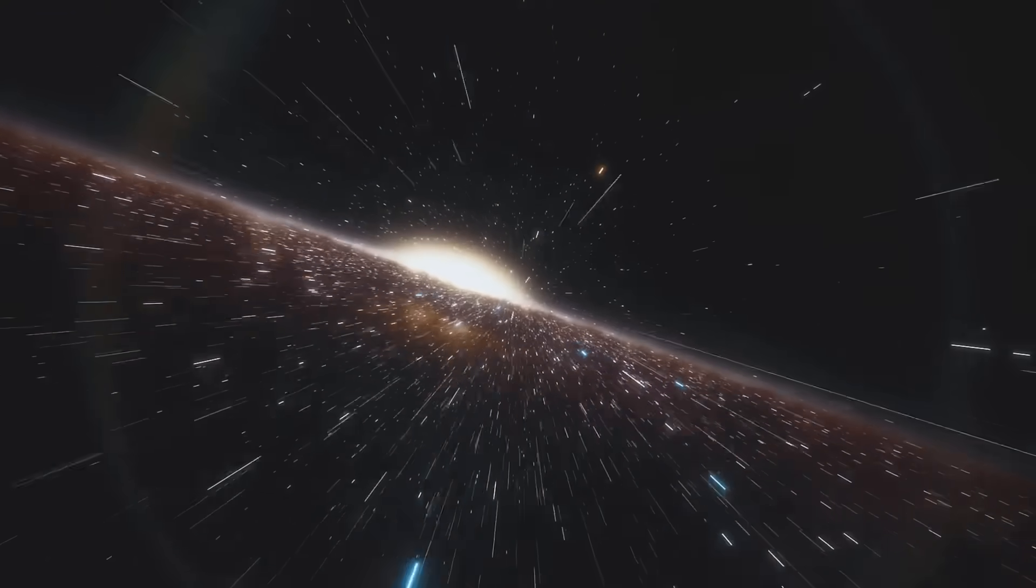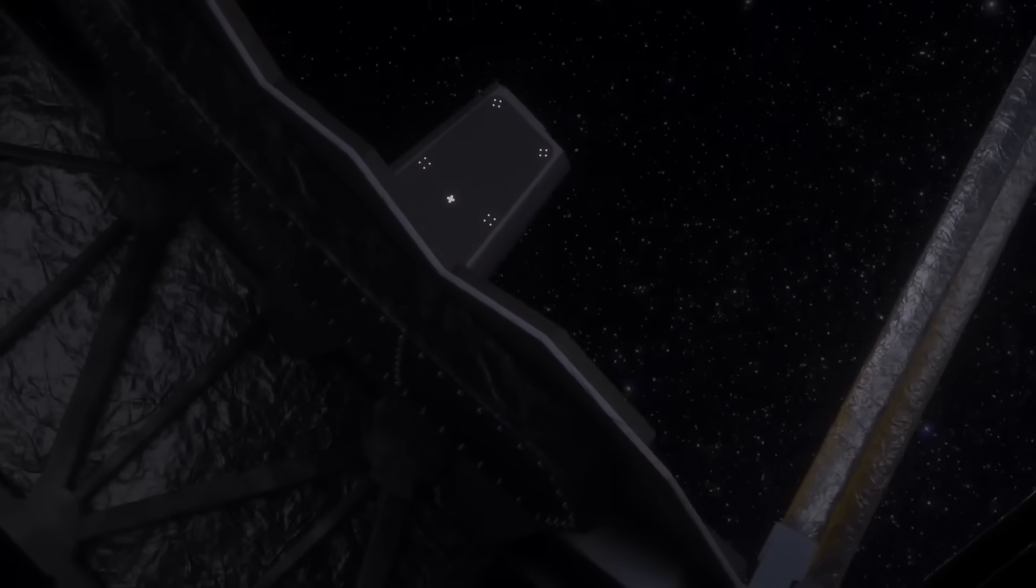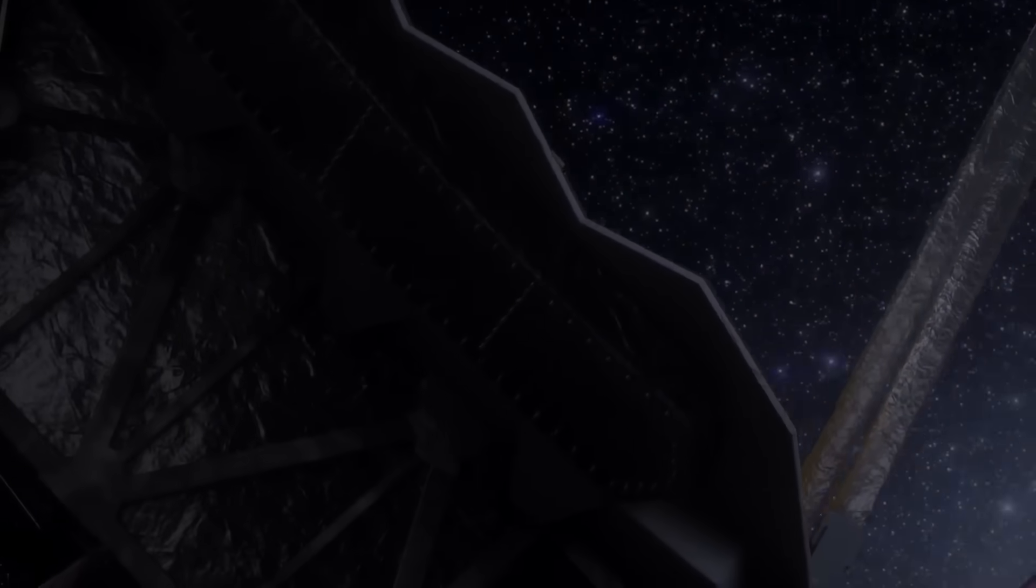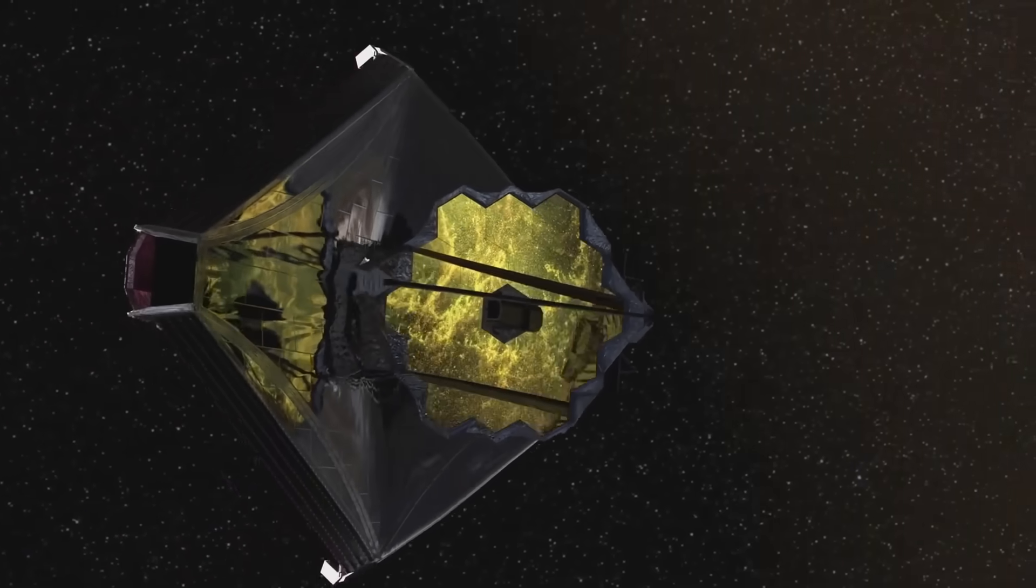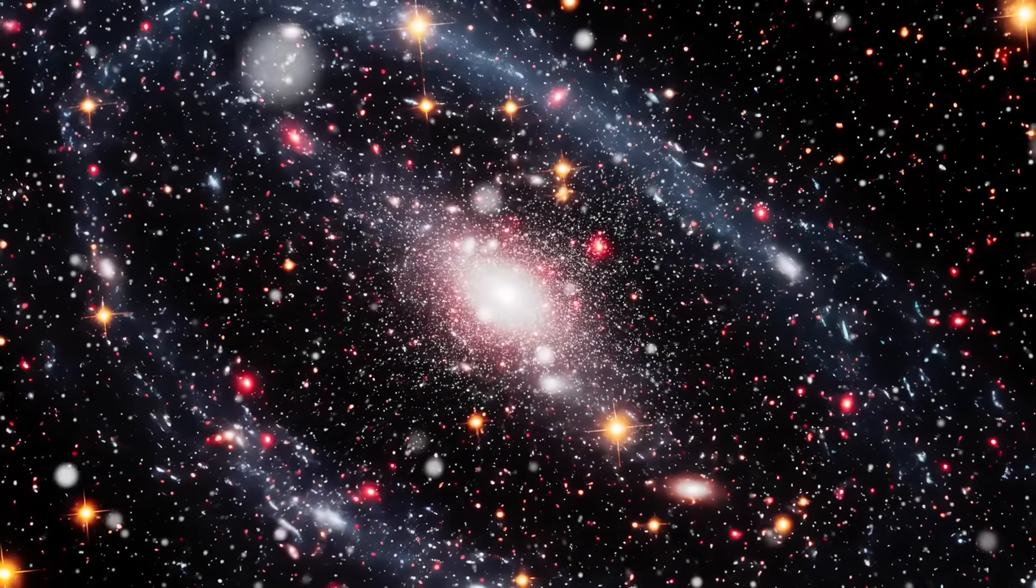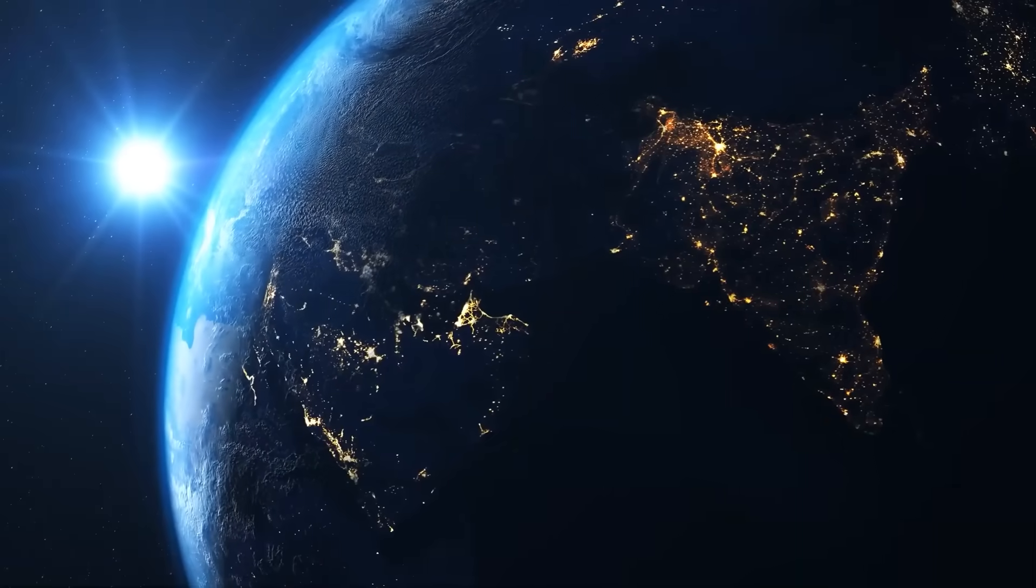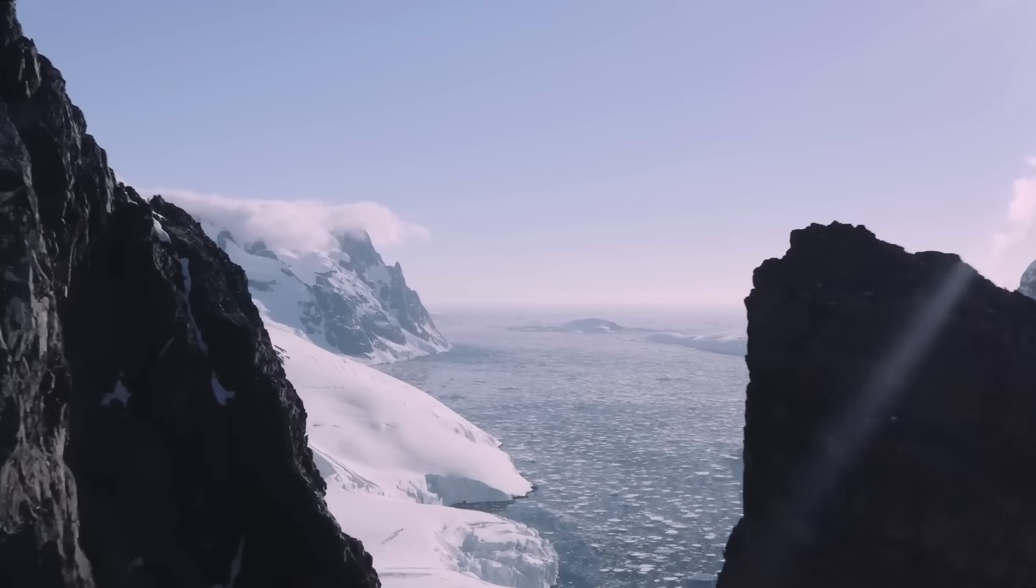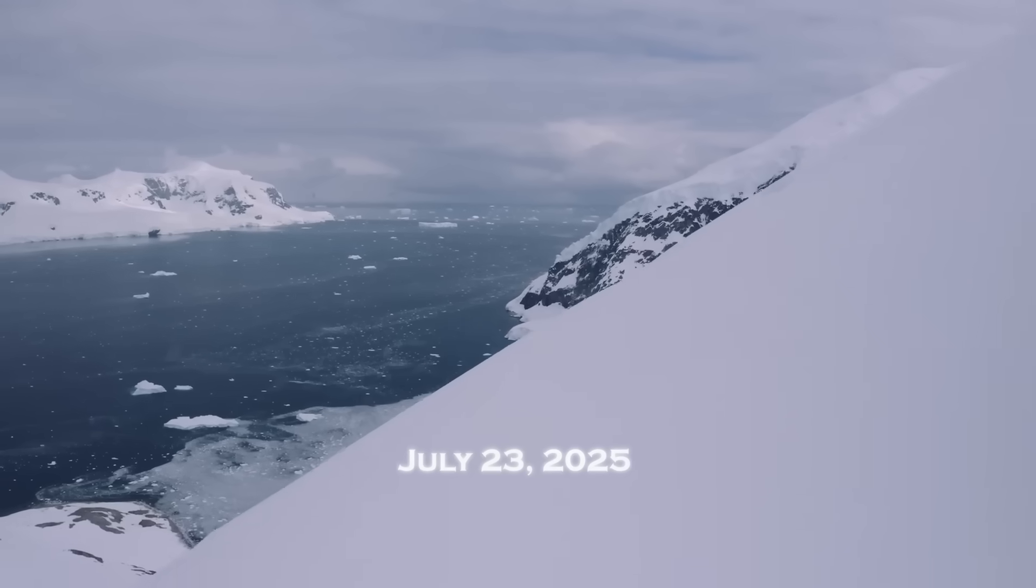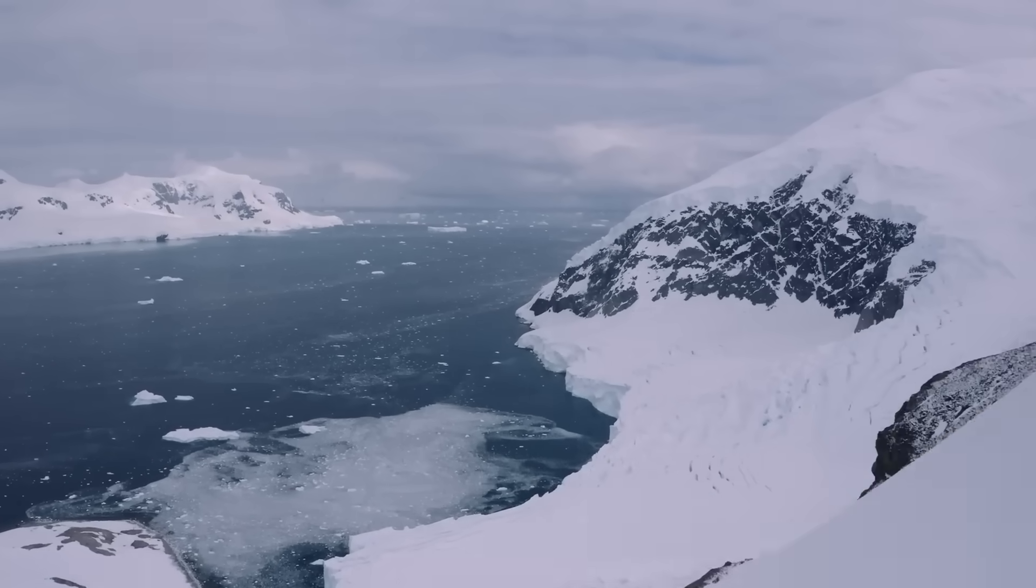Buried deep within the AI's output logs was a set of coordinates. A simple string of numbers, longitude, latitude, and time. At first glance, it looked like just another anomaly. But when an astronomer ran the numbers through a classical simulation, chills ran through the room. The coordinates pointed not to a location in space, but to a date and place on Earth. Specifically, a remote region in the Arctic Circle. And the date? July 23rd, 2025. Just weeks away.